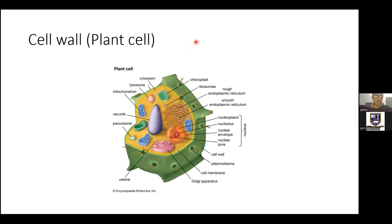The cell wall is only found in the plant cell and it gives the plant its shape and rigidity — its hardness. Plants face a harsh environment outside in open rain, so those cells need protection. The cell wall protects the inside of the cell and its organelles from the harsh environment and climate.